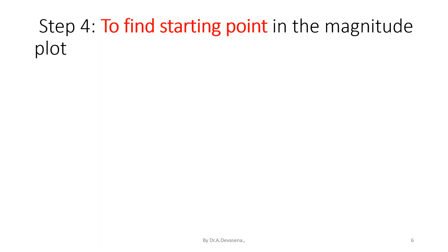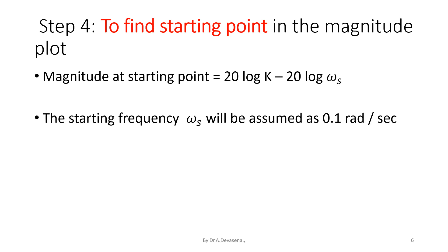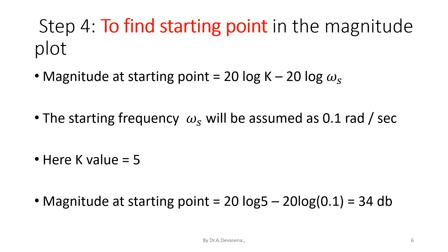Now we are going to find the starting point in the magnitude plot. In this problem we have a constant term and a 1/s term. Therefore we use the formula: magnitude at starting point = 20 log k minus 20 log ωs. The starting frequency ωs is assumed as 0.1 radians per second. With k = 5, the magnitude at starting point = 20 log 5 minus 20 log 0.1 = 34 dB.